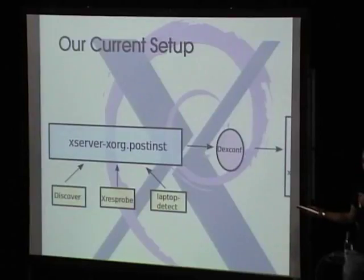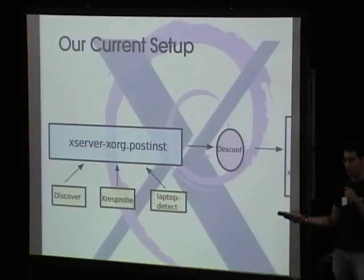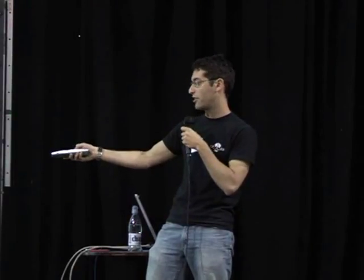This is a simple diagram of our current setup for how we handle configuration. Many of you are probably familiar with dpkg-reconfigure xserver-xorg, which will eventually ask you a bunch of questions via debconf and then spit out an xorg.conf. We basically have a single post-install script that calls debconf several times to ask questions or fills in blanks during the regular install process. It relies on several external programs to get information, including Discover, xresprobe, and laptop-detect. Discover is basically a database full of PCI IDs matched to various device drivers.